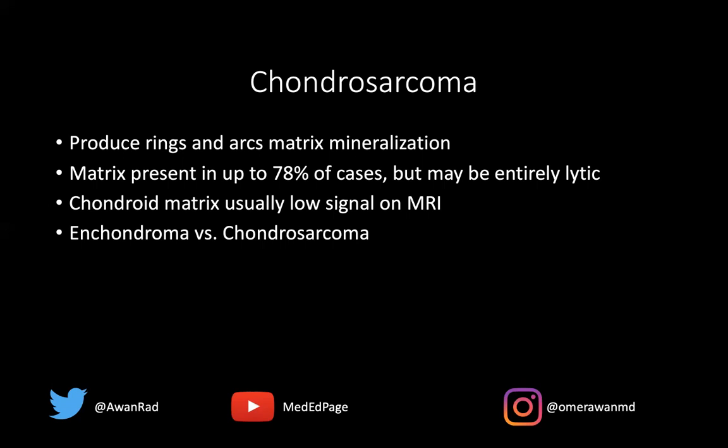When can it be a chondrosarcoma? If we see a soft tissue mass associated with it, aggressive periosteal reaction, rapid growth in a short period of time, or endosteal scalloping greater than two-thirds of the cortex thickness — though that criterion is more reliable in long bones like the femur, tibia, and humerus, and less reliable in tubular bones of the hand or foot. On bone scan, if technetium-99m MDP uptake is greater than background at the anterior superior iliac spine, that can also be a sign of chondrosarcoma. Those are helpful clues for distinguishing enchondroma from chondrosarcoma.